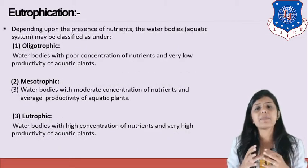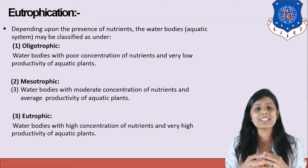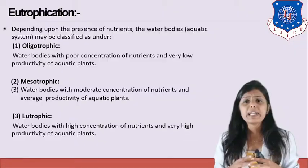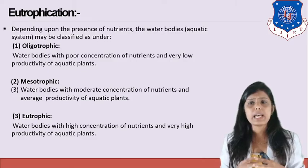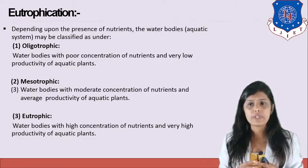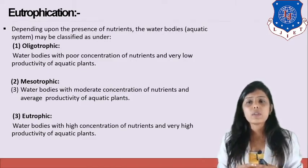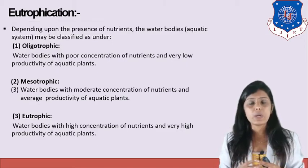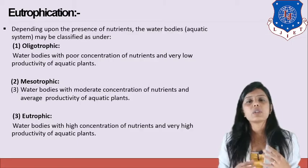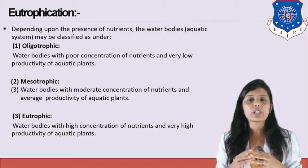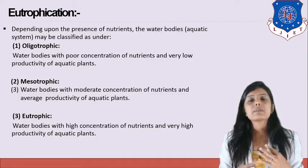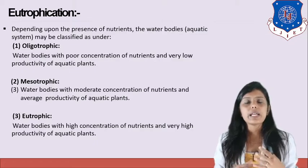Eutrophication mainly happens in lakes. There are three stages depending on the presence of nutrients. The first is the oligotrophic stage — water bodies with poor concentration of nutrients and very low productivity of aquatic plants. Initially, when a lake is newly formed, it is in the oligotrophic stage because the amount of nutrients is less.